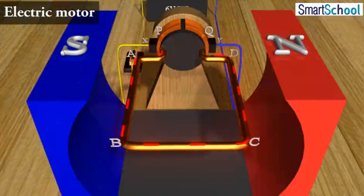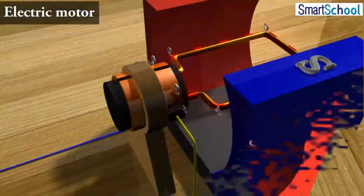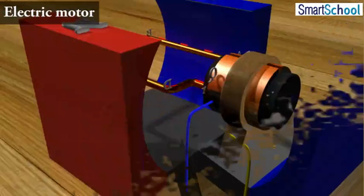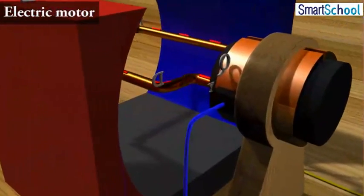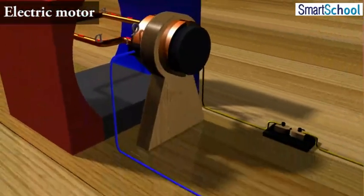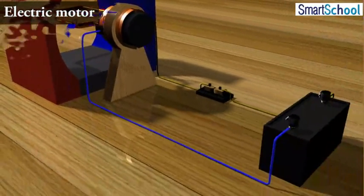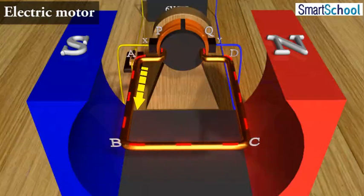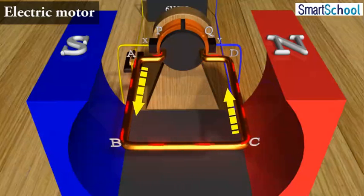Current in the coil ABCD enters from the source battery through conducting brush X and flows back to the battery through brush Y. Notice that the current in the arm AB of the coil flows from A to B. In arm CD, it flows from C to D, opposite to the direction of current through arm AB.